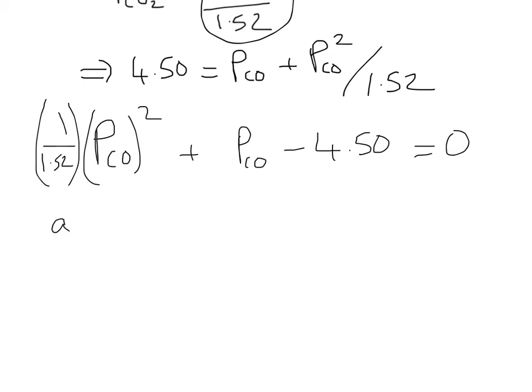Well, this now looks like an AX squared plus BX plus C equals 0 equation, where X is our partial pressure we're trying to solve for, and A is, well in this case, plus 1 over 1.52. B, in this case, is just 1, and for C, that's equal to minus 4.5.